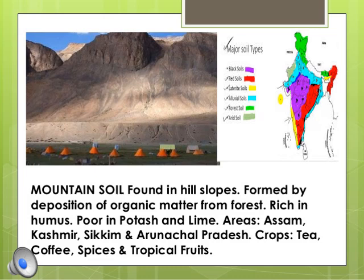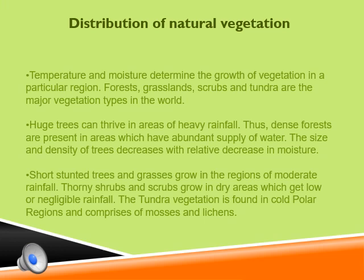Mountain soil, or forest soil, is one and the same. See the fluorescent green part near the Jammu and Kashmir area — there you find the mountain soil. Mountain soil is mainly found in the hill slopes covered with forest. This soil is formed due to the deposition of organic matter and is thus rich in humus. It is suitable for tea, coffee, and spice cultivation.